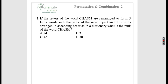The letters of the word CHASM are rearranged to form 5-letter words such that none repeat, and the results are arranged in ascending order as in a dictionary. What is the rank of the word CHASM? We start with 'A' — we'll cover all words starting with A, placing A at the first position and rotating the remaining four characters.